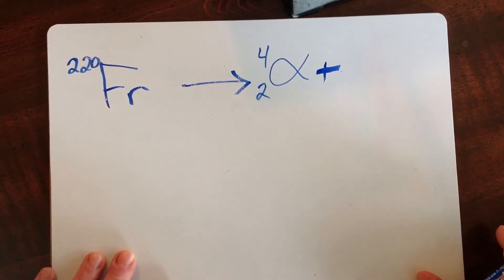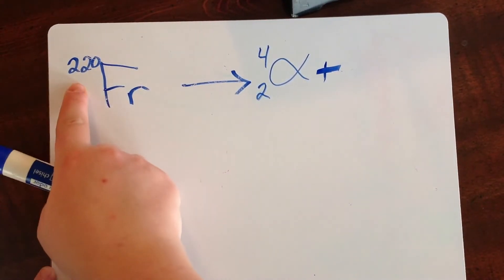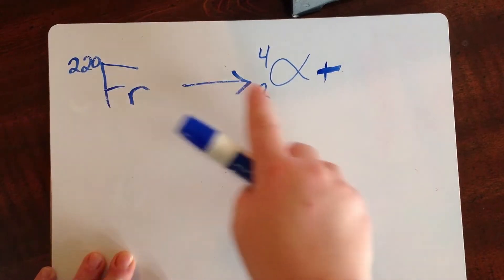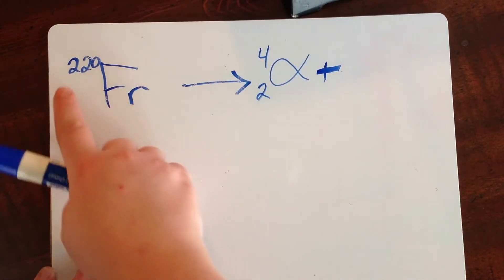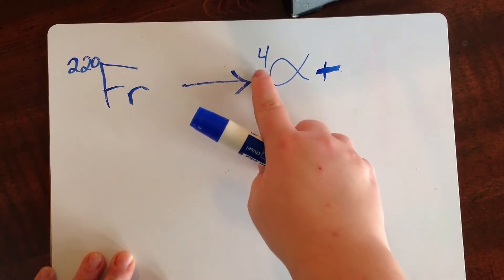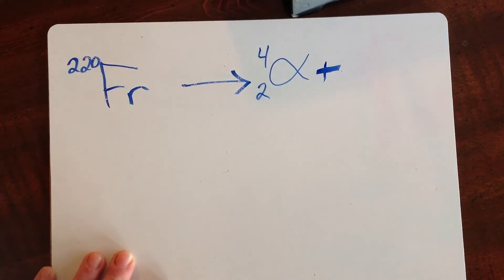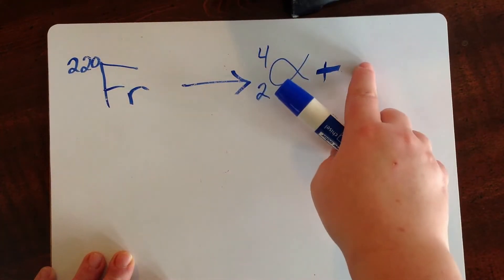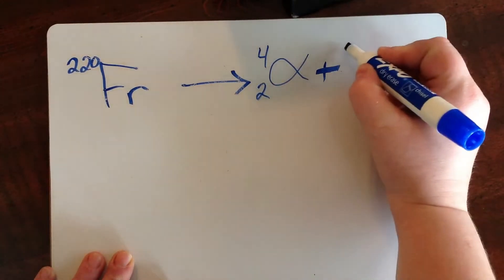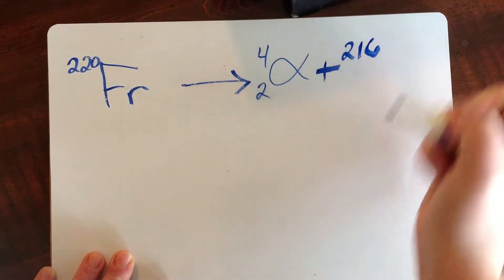When you're writing nuclear reactions, the sum of the superscripts on the left has to equal the sum of the superscripts on the right. So 4 plus what gives me 220? That would be 216.